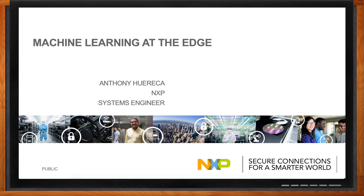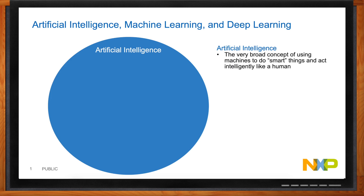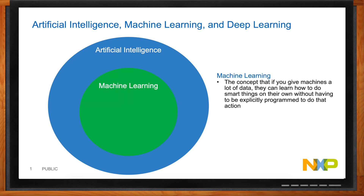There are a lot of concepts in artificial intelligence and machine learning that are often treated as synonyms, but they're actually a little bit different. Artificial intelligence is the very broad concept of using machines to do smart things and act intelligently like a human — through machine learning, if-else trees, or several other ways. Machine learning is a subset of artificial intelligence.